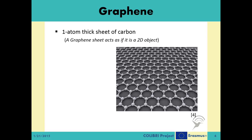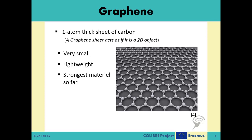Unlike any other material, graphene sheets act like they are two-dimensional objects, which is quite a unique case. They are very small in size and suitable for very high levels of miniaturization. They are very lightweight, yet they are one of the strongest materials known so far. Also, they have a very high heat and electricity conductivity.